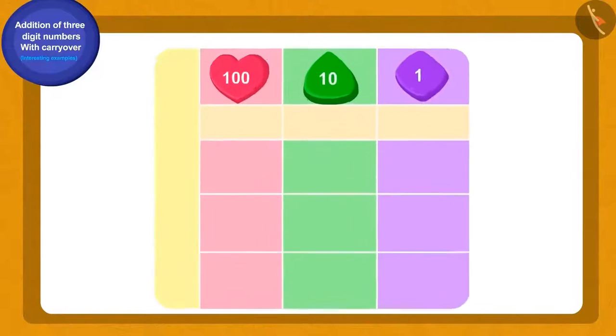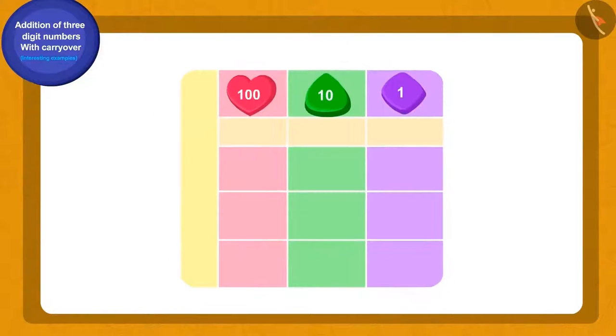Come, this time we should use addition without using tokens. First, we will write 359 and 235 using the places of hundreds, tens and ones like this. Is this right? What shall we do now? We will add numbers written in place of ones.